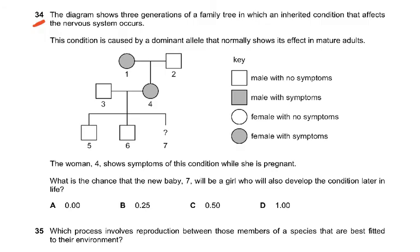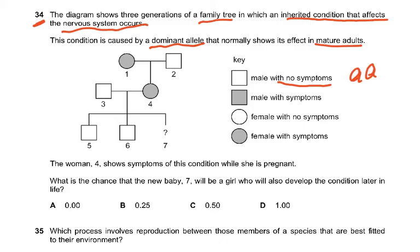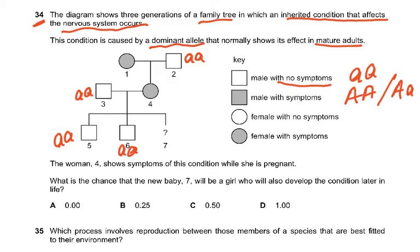Question 34 shows three generations of a family tree in which an inherited condition affecting the nervous system occurs. The condition is caused by a dominant allele that normally shows its effect in mature adults. People who are normal must be homozygous recessive — small a, small a. People who have symptoms could be heterozygous (big A, small a) or homozygous dominant (big A, big A). Write the genotypes on the paper. The sufferer must be heterozygous because the small a has been passed into the children.